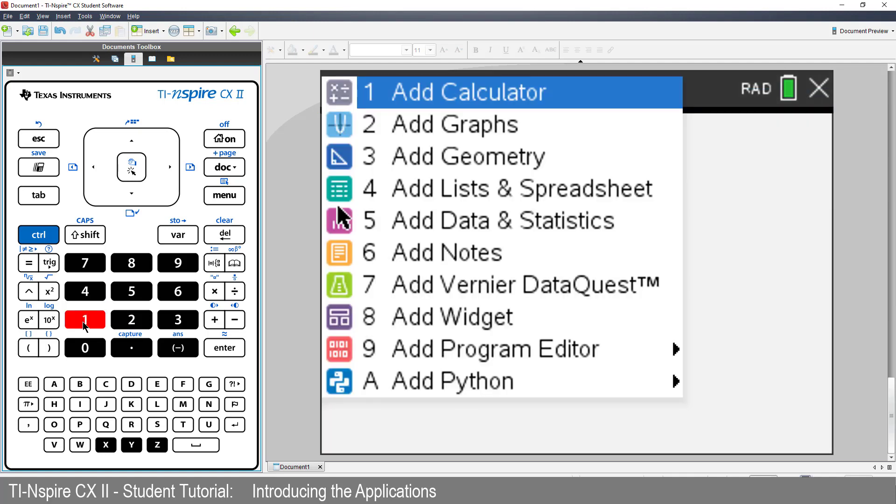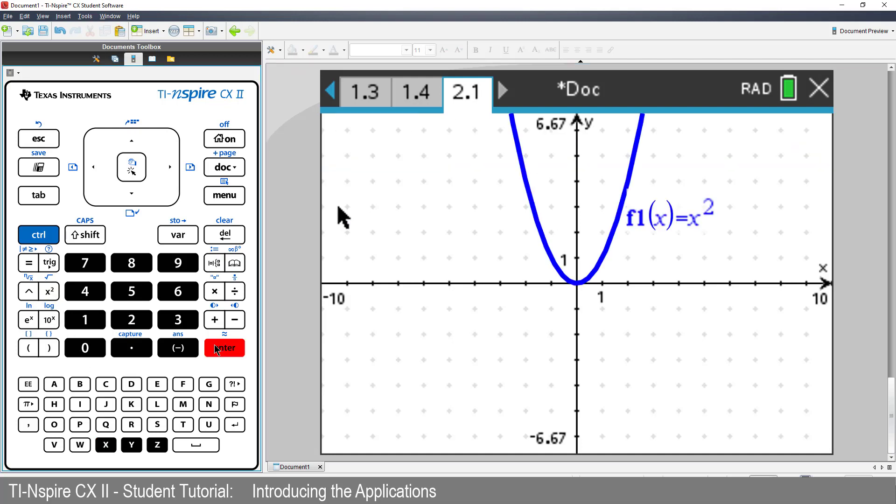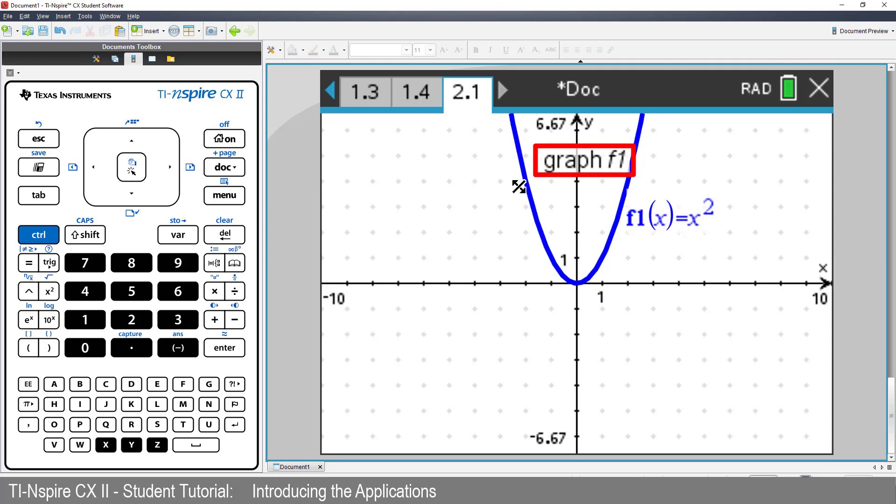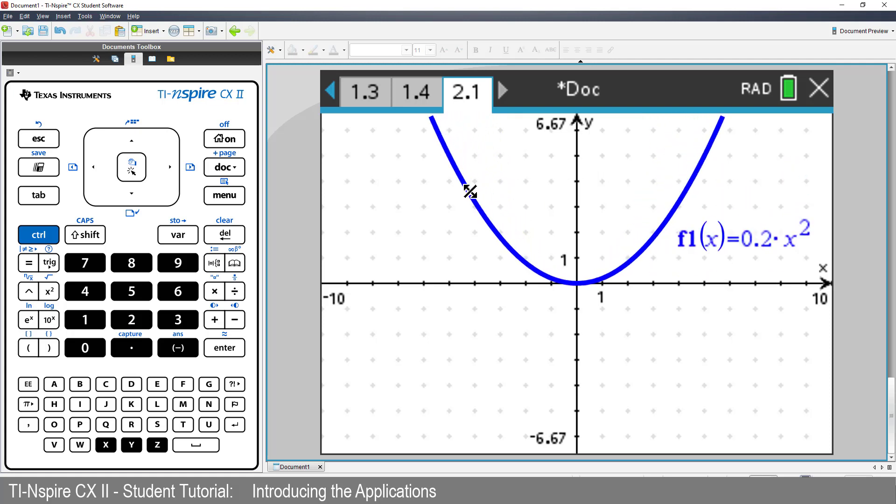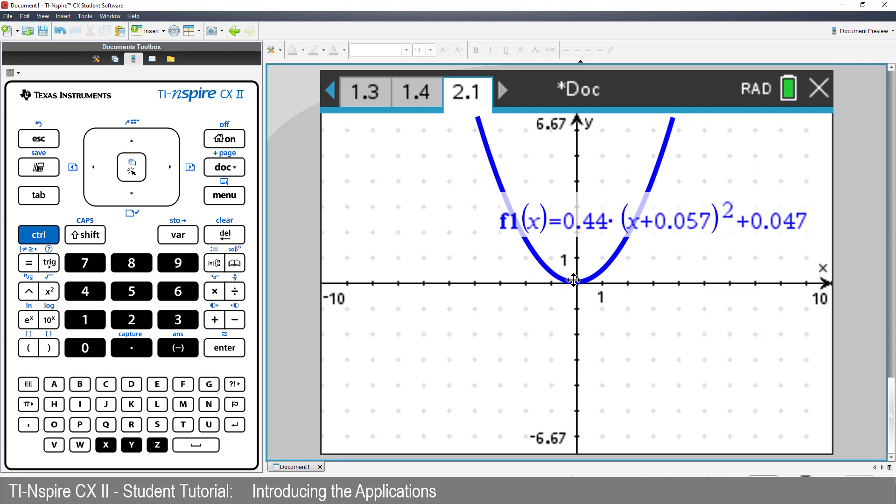Let's add a Graphs application, or graph X squared. Move the mouse across to the graph until Graph F1 is displayed. Press and hold on the centre of the touchpad for a moment. Notice the small hand grabs the function. Now swipe to the left, and the right, and up, and down. Many of the graphs created in the Graphs application are also dynamic.